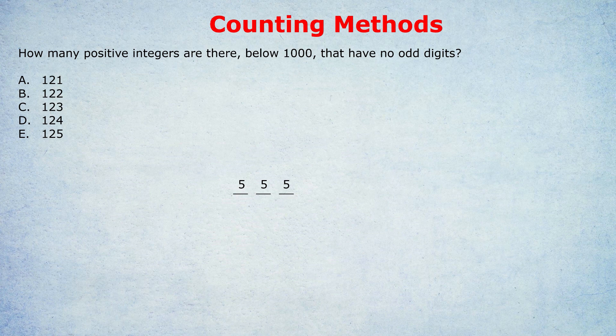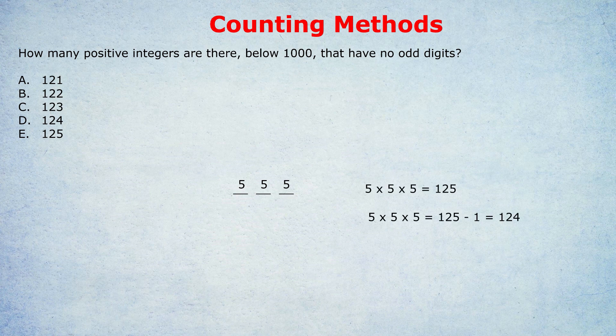But the eagle-eyed amongst you would have noticed one problem with that. We've included the number 0, 0, 0, which doesn't have any digits at all. In fact, that wouldn't even be a positive integer. 0, 0, 0 is the number 0, and that's not a positive integer. So we can't have that. We're allowed any other option, like 0, 0, 2. That's the number 2. Or 0, 2, 0. That's the number 20. But we can't have 0, 0, 0 because that's not positive. So out of the 125 options available, we actually have to take away 1 because that's the 0, 0, 0 option. And the number 0 isn't positive. It's even, but it's not positive. So the answer is D. We have 124 integers available.